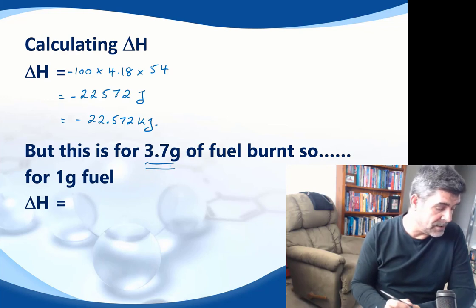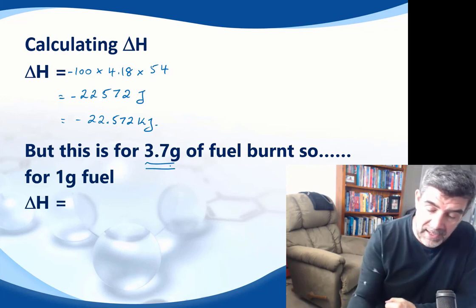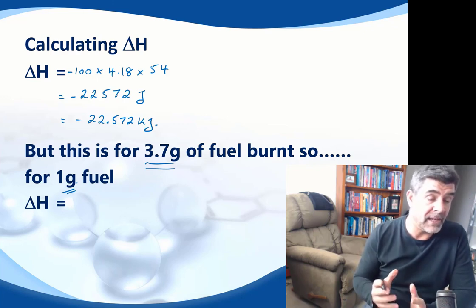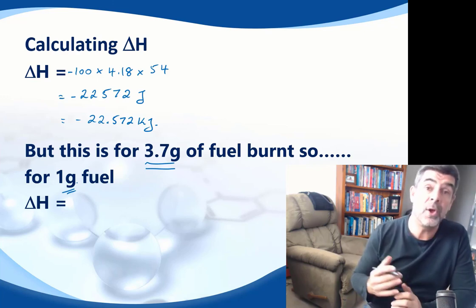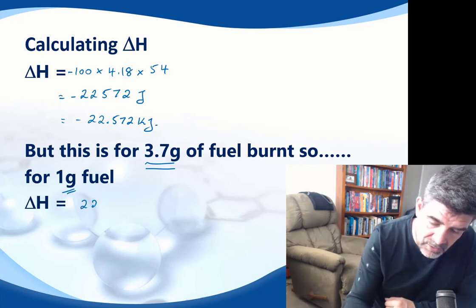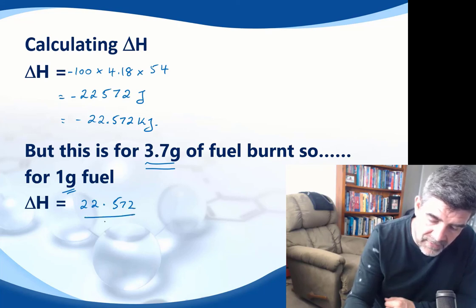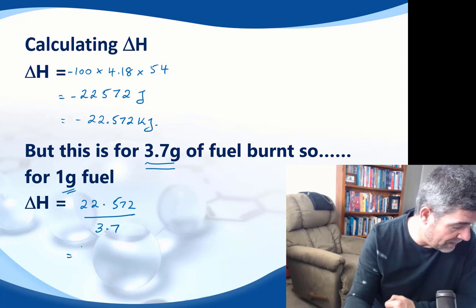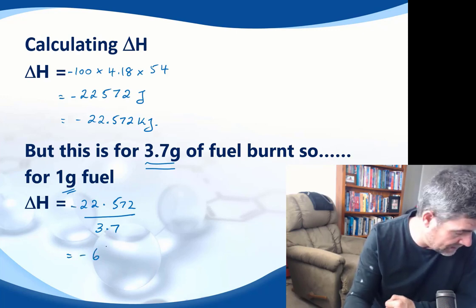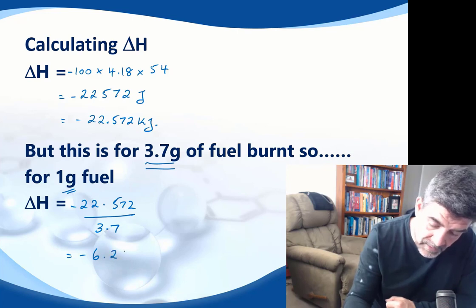So what we need to be aware of is that if we standardize this, we can actually get the value of the energy generated per gram of fuel. So the simple way to do that is to take 22.572 and divide that by 3.7, and when we do that, we get a value of, still negative, so minus 6.2 kilojoules per gram.